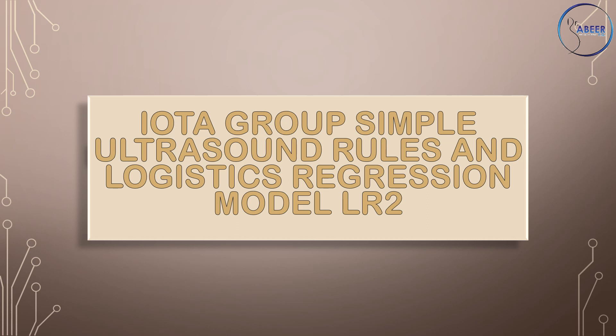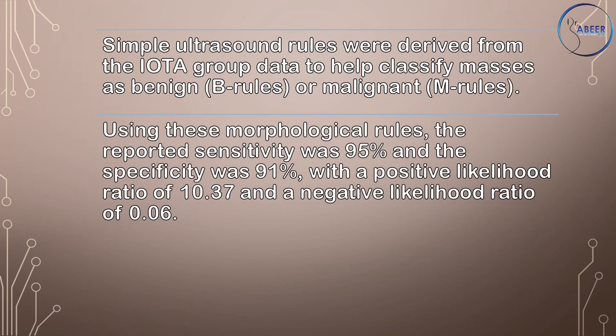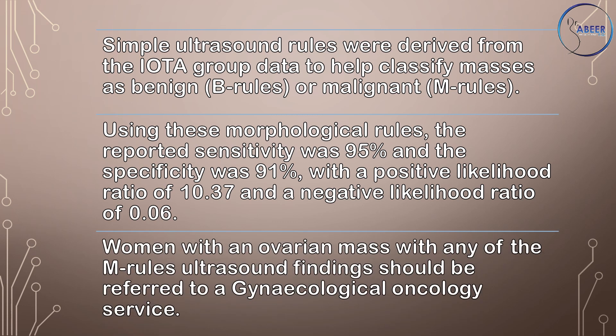IOTA — International Ovarian Tumor Analysis Group — Simple Ultrasound Rules and Logistic Regression Model LR2. Simple ultrasound rules were derived from the IOTA group data to help classify masses as benign (B rules) or malignant (M rules). Using these morphological rules, the reported sensitivity was 95% and the specificity was 91%, with a positive likelihood ratio of 10.37 and a negative likelihood ratio of 0.06. Women with an ovarian mass with any of the M rules ultrasound findings should be referred to a gynecological oncology service.